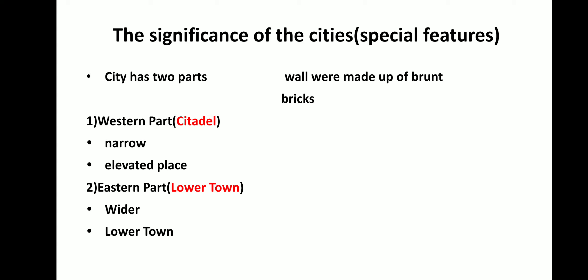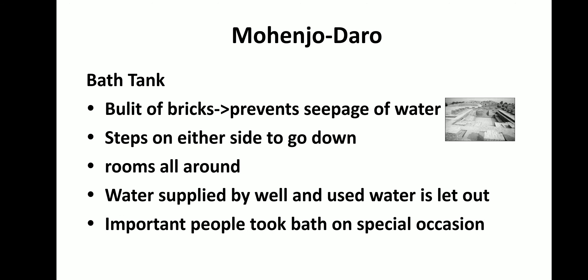Let's see the special features of these cities. These cities had two parts: the western part called the citadel and the eastern part called the lower town. The walls were made of burnt bricks. The western part was narrow and elevated, while the eastern part was wider. One important city, Mohenjodaro, had a famous bath tank — built of bricks to prevent seepage of water, with steps on either side to go down into it. Rooms were all around, possibly used for changing.